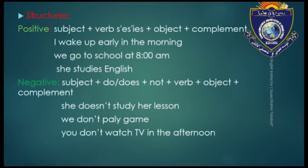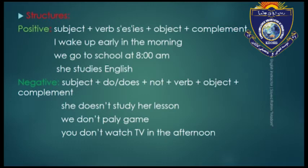Negative: subject + do/does + not + verb + object + complement. For example: she doesn't study her lesson. We don't play games. We don't watch TV in the afternoon. After the helping verb do/does, we put 'not' to make the statement negative.